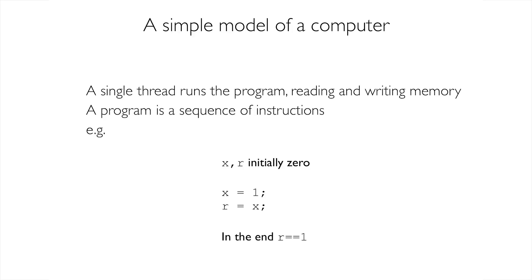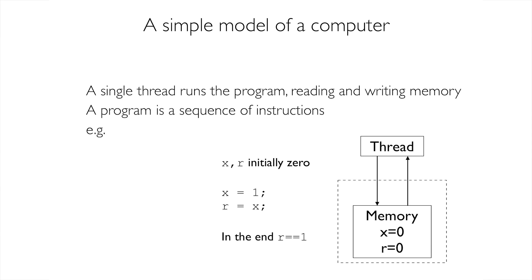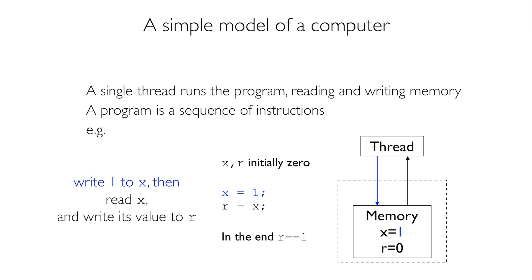Here is a simple program — a single-thread program. It just does one thing: it writes to x as a variable, then reads x and writes to r. It's a single thread of execution that reads and writes from a single memory. The program first writes one to x, then reads x from memory, and finally writes that value to r.